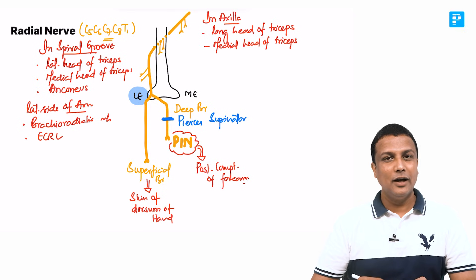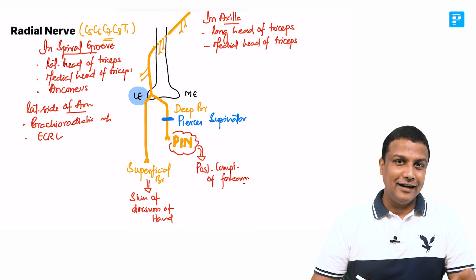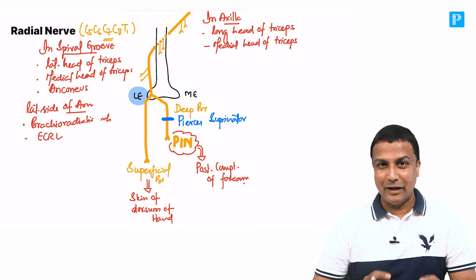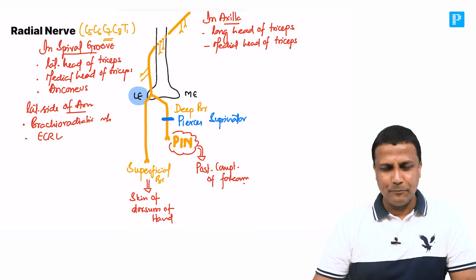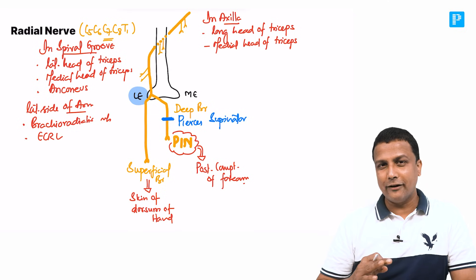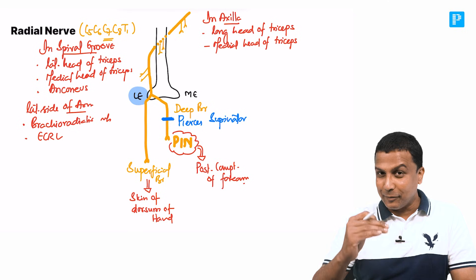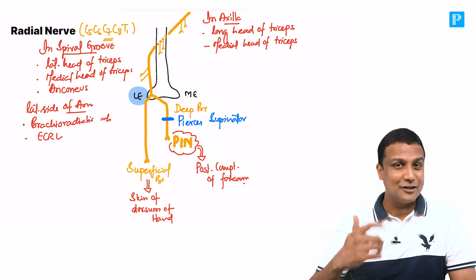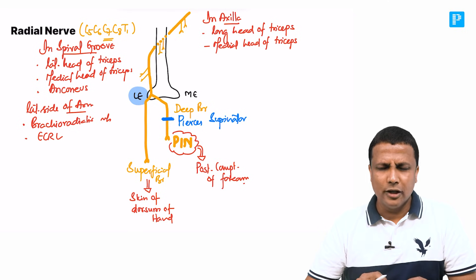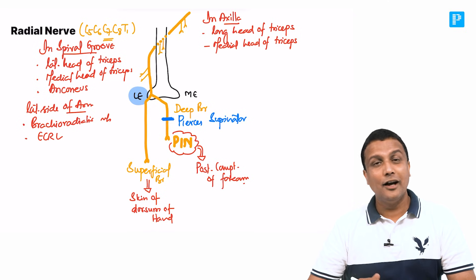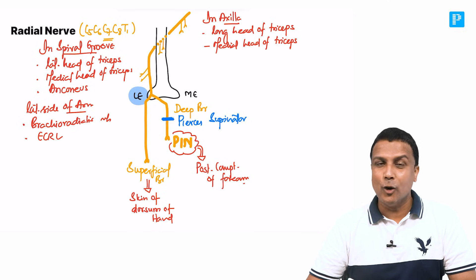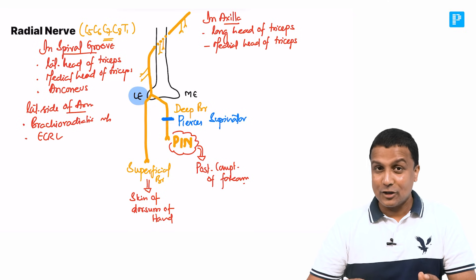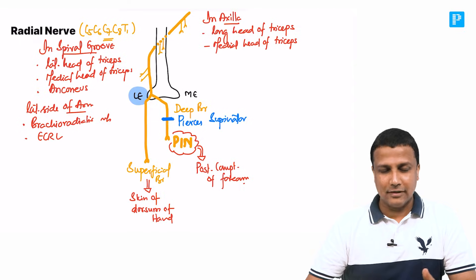That is the most important trick, my dear friends. Remember those four landmarks — triceps, ECRL, PIN, and the superficial branch — and you will be able to answer any question regarding radial nerve injury. I hope this integration will actually help you. Thank you, all the best, my dear friends.